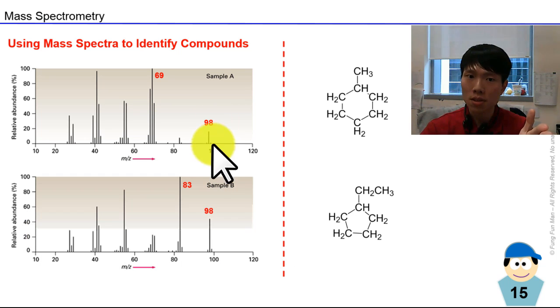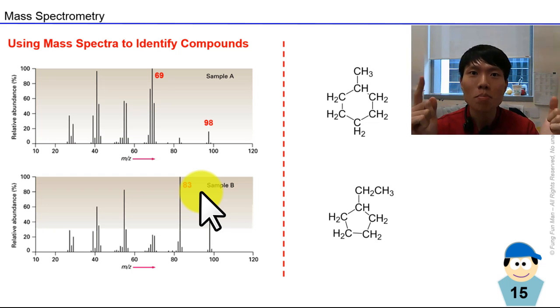We see the base peak is 83 for one and 69 for the other. I always remind you to see the difference between the molecular ion peak and the base peak. Here we have a difference of 29 - 98 minus 69 is 29. For sample B, 98 minus 83 is 15. Fifteen is a methyl group. Where can I cut a methyl group? I could do it here, or here as well, so both are fine.